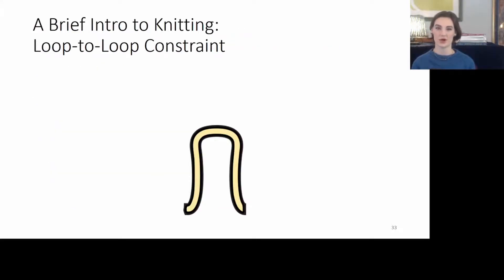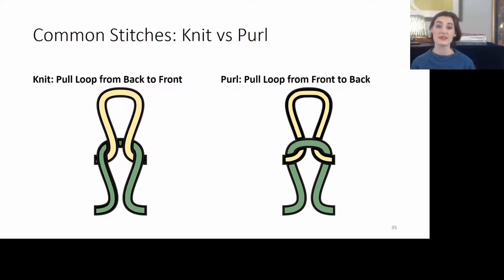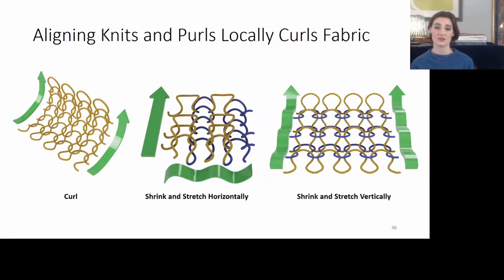Consider a yellow loop of yarn. If you pulled on either end, it would fall apart. But if you pulled that yellow loop through a green loop and pulled on either end of the green loop, the green loop would remain stable. We can knit a stitch by pulling it from back to front, or purl a stitch by pulling it from front to back, and each of these curl in different directions. And if we align a bunch of knit stitches and purl stitches across a fabric, we can create properties such as curl, shrink, and stretch.